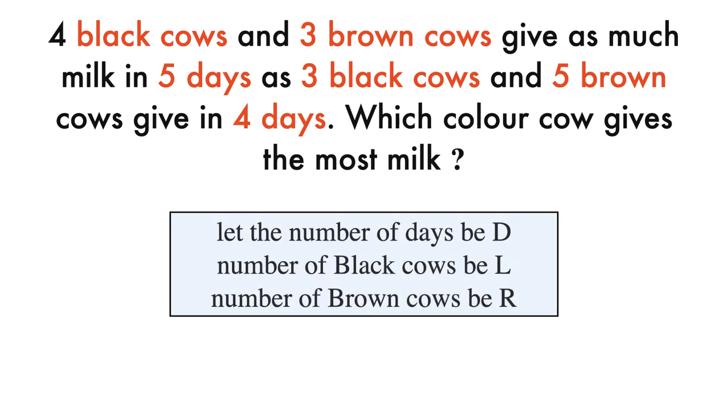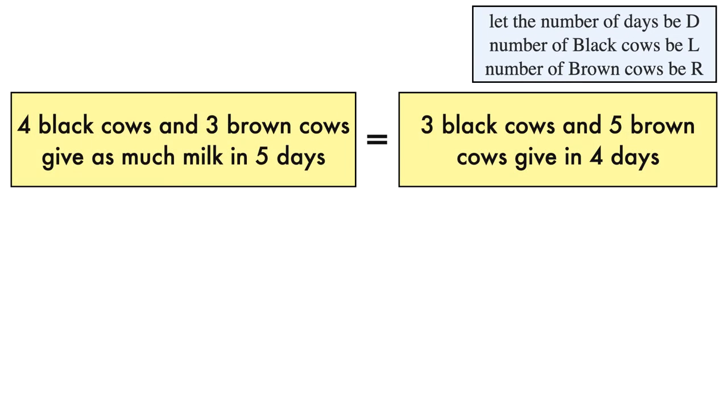Let the number of days be D, number of black cows be L, number of brown cows be R. According to the problem statement, 4 black cows and 3 brown cows gives as much milk in 5 days as 3 black cows and 5 brown cows gives in 4 days. This can be written in the form of equation like this.